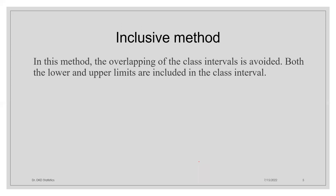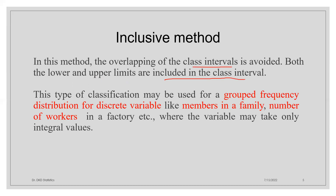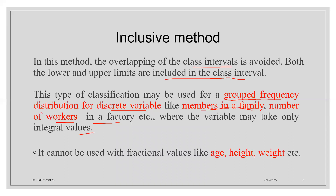Next is the inclusive method. In this method, the overlapping of the class intervals is avoided. Both the lower and upper limits are included in the class interval. This type of classification may be used for a grouped frequency distribution for discrete variables like members in a family, number of workers in a factory, etc., where the variable may take only integral values. It cannot be used with fractional values like age, height, weight, etc.